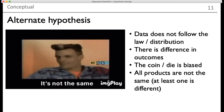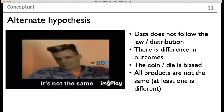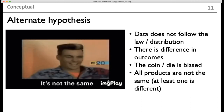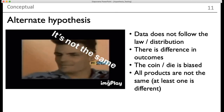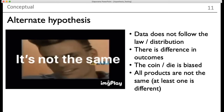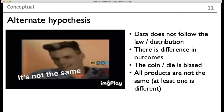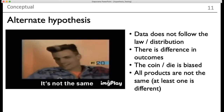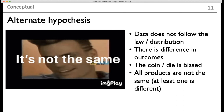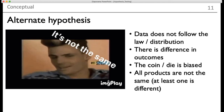The alternative hypothesis says the data does not follow the law or theory, and there is a difference in outcomes. If comparing multiple products, at least one product is different. For example, if I flip a coin 200 times, the expectation is 100 heads and 100 tails. But the experiment might not confirm this, so one wonders whether the coin is biased. The alternate hypothesis says the coin is biased; the null hypothesis says it is not.